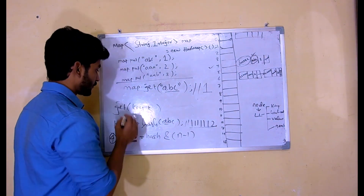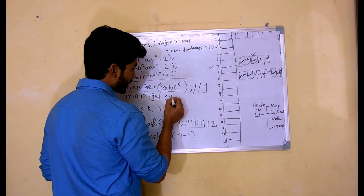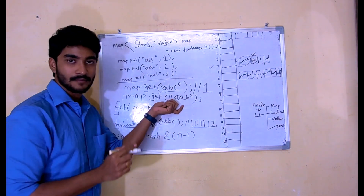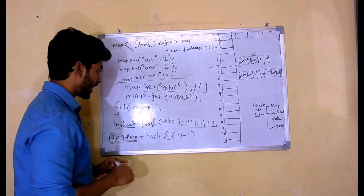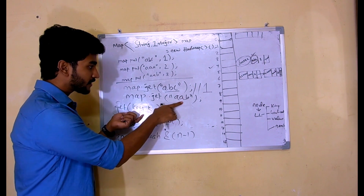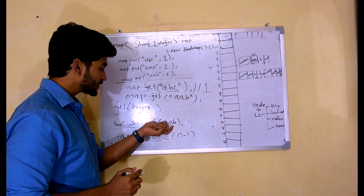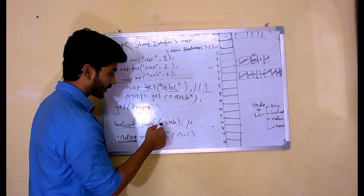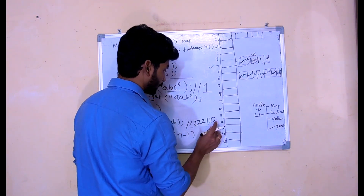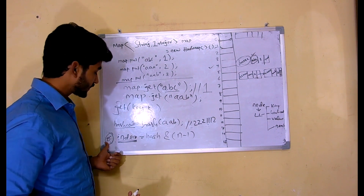Now let's take another scenario. Let's think that I'm going to have another operation map.get, and let's think that I am looking for my key AAB. This is the key that I'm looking for. The same thing will happen once again. I'm looking for the key AAB, so the hash will be computed for AAB. What is the hash code we'll get for AAB? Let's assume the hash code is 222112, and then the index is computed — the index that we're going to get, let's say it is 6.